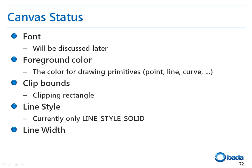Like the graphic context of other frameworks, the canvas saves various drawing states. A canvas saves the font, foreground color, clip bounds, line style, and line width items. The foreground color specifies the color when a point, line, or curve is drawn on the screen. The line style only supports a solid line at present. The line width determines the width of the line to be drawn.